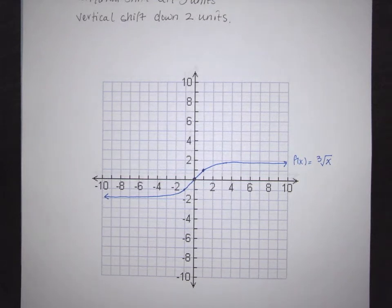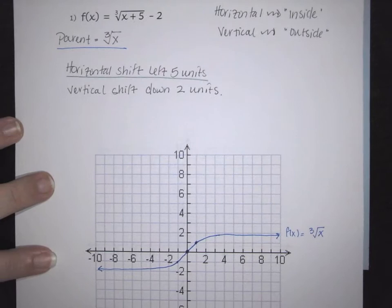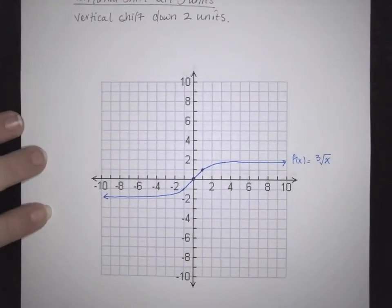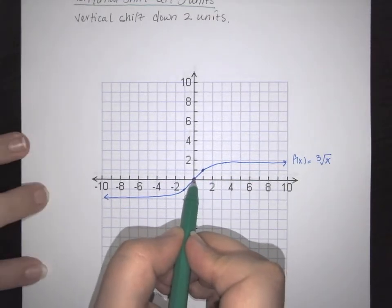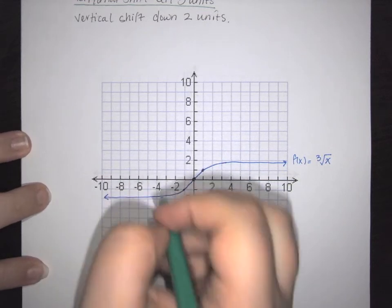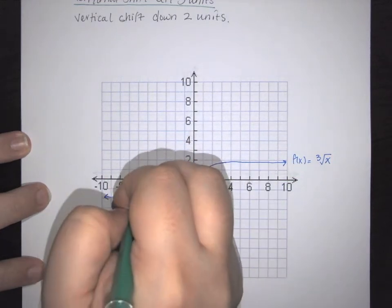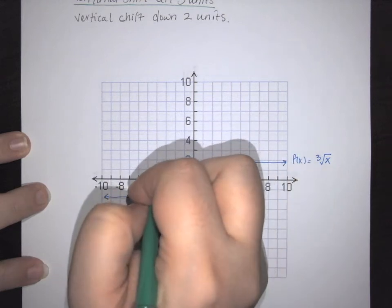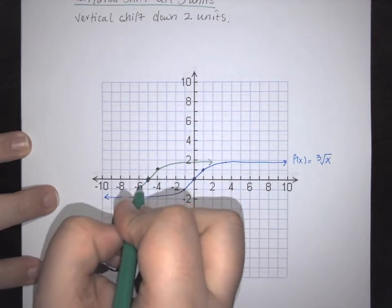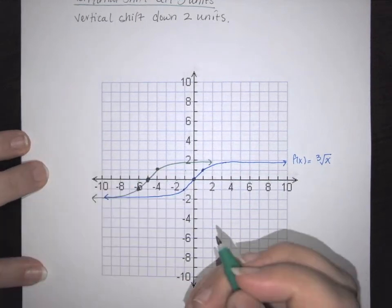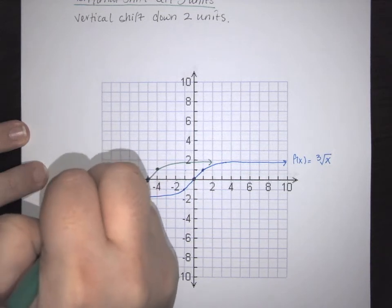Next I'll graph the horizontal shift in green. We're shifting to the left, so we take our points and move them left five units — one, two, three, four, five — each point shifts over. Then I graph the shifted curve going up and down accordingly. This one is f of x equals the cubed root of x plus five.